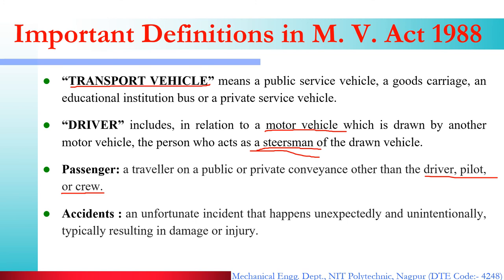The last definition is Accident: an unfortunate incident that happened unexpectedly and unintentionally, typically resulting in damage and injury. So any incident that happened unexpectedly — unintentionally you did not try to cause it but it happened by itself due to some reason — and in which someone is damaged, a vehicle is damaged, someone's property is damaged or someone is injured — such an incident is called an Accident.